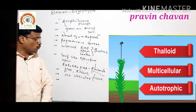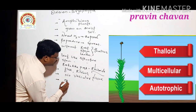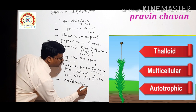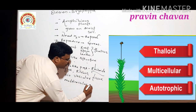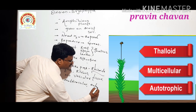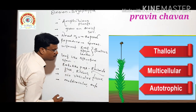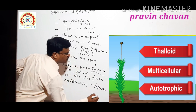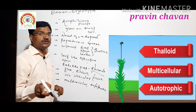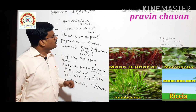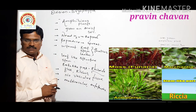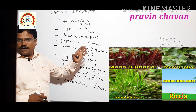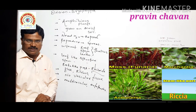These plants are multicellular and autotrophic. Autotrophic means self-nutrition — they prepare their own food by the process of photosynthesis, due to the presence of chlorophyll. Examples include Funaria, Marchantia, Anthoceros, and Riccia.